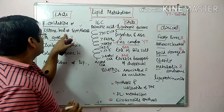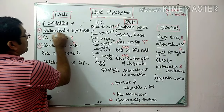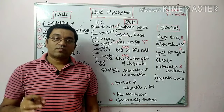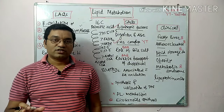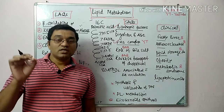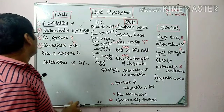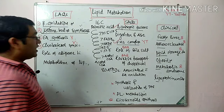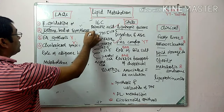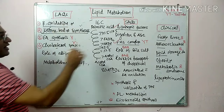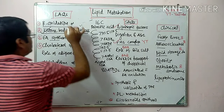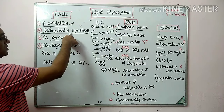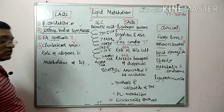Ketone body synthesis occurs in the liver, but the liver cannot utilize ketone bodies because of the absence of the enzyme thiophorase. This is a very important LAQ, and YouTube video lectures are available on beta oxidation of fatty acid and ketone body synthesis and utilization.